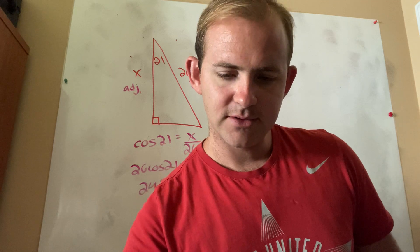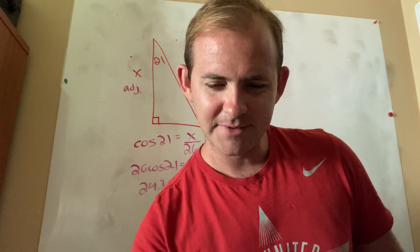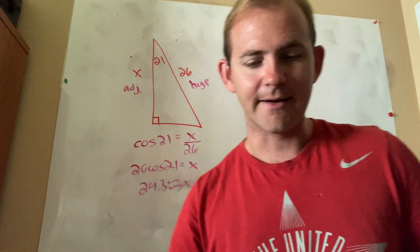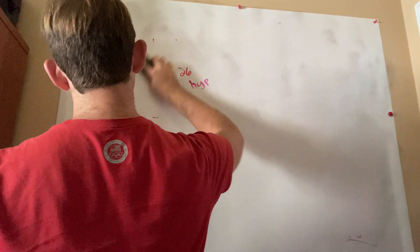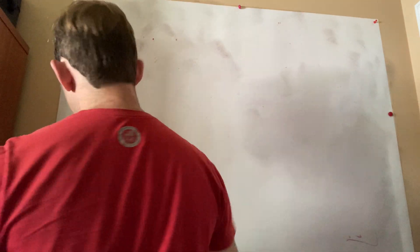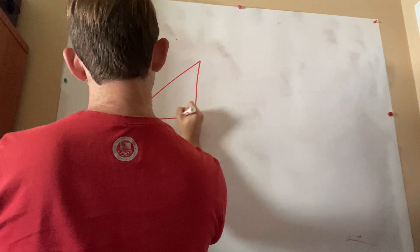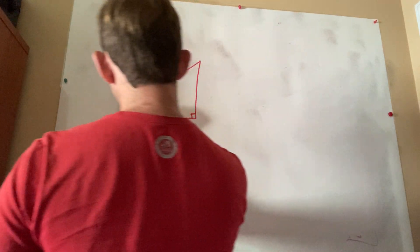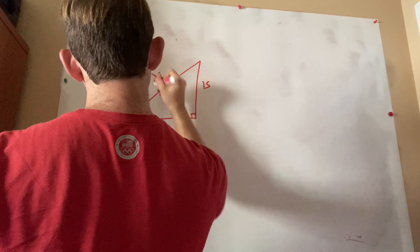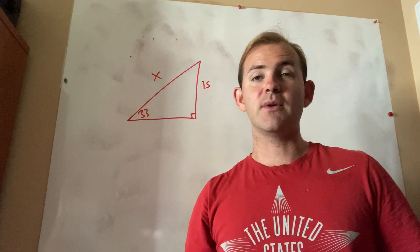The last example we're going to take a look at is example number eight. Because example number eight uses a little bit of funky algebra. Those of you guys who have taken chemistry and studied the density formula may find this to be relatively easy. But there's one small algebraic trick here we need to make sure we're on top of. So let's go over example number eight. So I have 33, 15, and X.